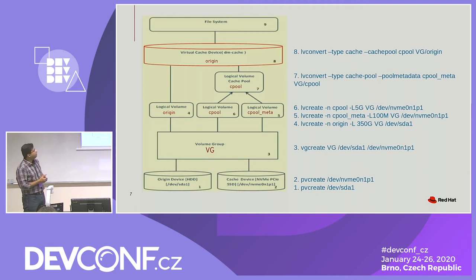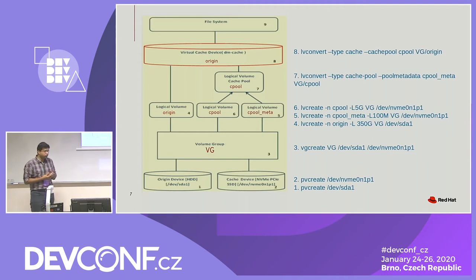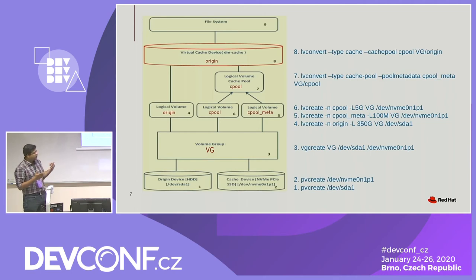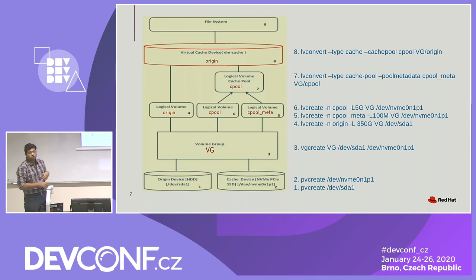The long way to set up caching gives maximum flexibility. You have two LV converts because you manually create the cache pool by creating data and metadata separately. This is useful if you want different RAID levels on your data and metadata — for example, you might mirror your metadata device and set up RAID 5 on your data device. You may also want to use different devices for data and metadata, such as super fast storage for metadata and reasonably fast storage for data. These slides will be sent out for reference.